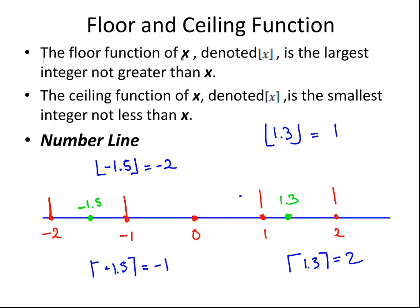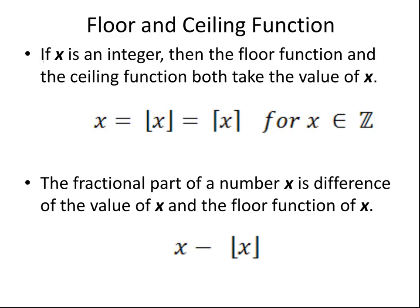It's usually on the negative side of the number line that we run into problems. Now if x is an integer, then the floor function and ceiling function both equal x. So if x is an integer: x = ⌊x⌋ = ⌈x⌉.